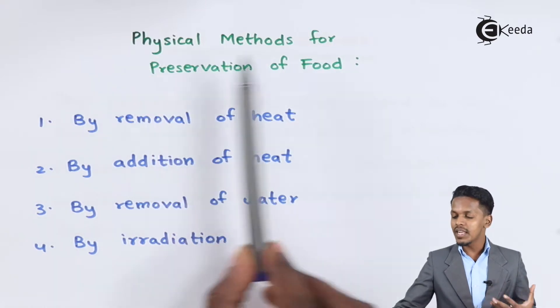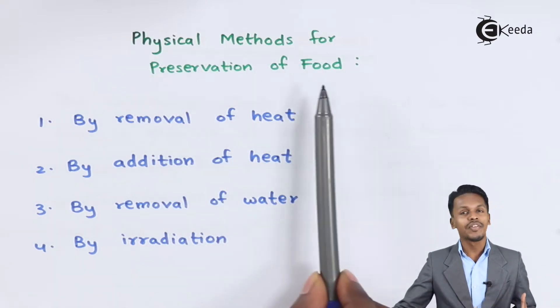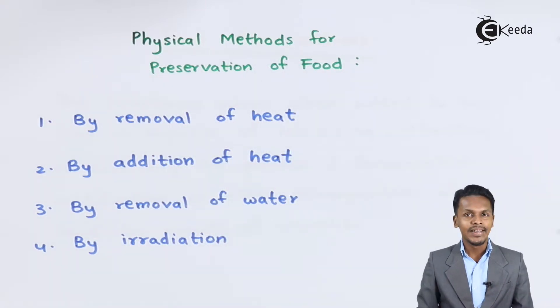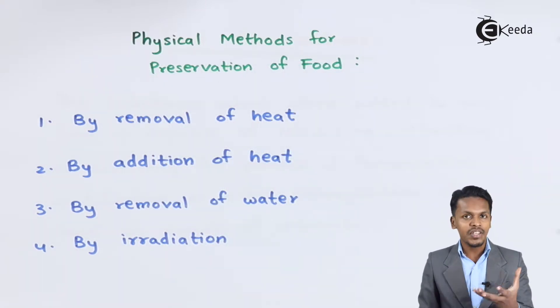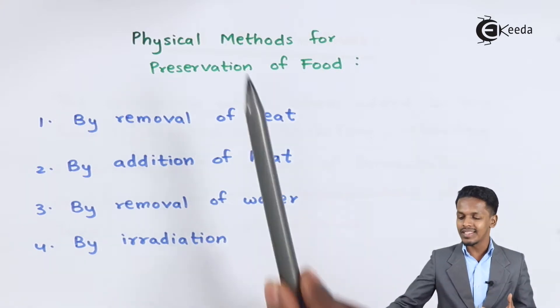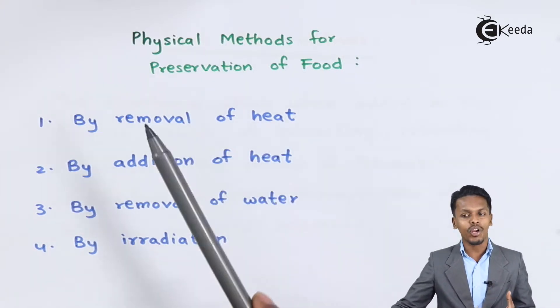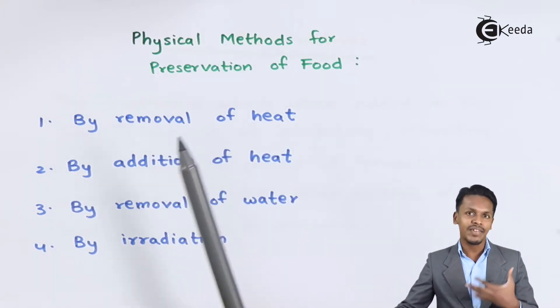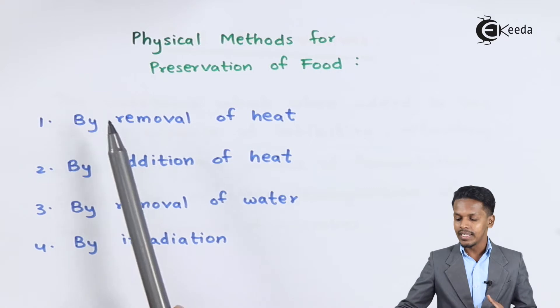Now let me talk about the physical method for the preservation of food. There are two ways we can preserve food: a physical method as well as a chemical method. In this topic, we are going to talk about both the physical method and the chemical method.